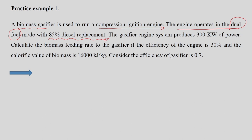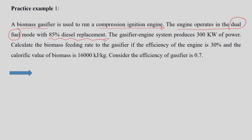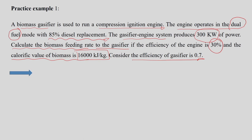The remaining 15% of the power is produced by diesel and 85% of the power is produced by the producer gas supplied from the gasifier. The gasifier-engine system produces around 300 kilowatts of power. We need to calculate the biomass feed rate to the gasifier. The engine efficiency is 30%, the calorific value of biomass is 16,000 kilojoules per kg, and the efficiency of the gasifier is 0.7. Let us first draw a small schematic to understand how this gasifier is used to run the engine and produce power.